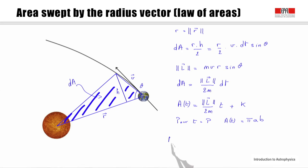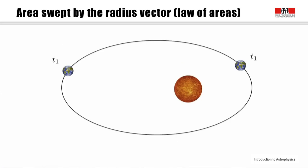Between two times t1 and t2, we have that A(t1) minus A(t2) is equal to the norm of the angular momentum over 2m times delta t, where delta t equals t2 minus t1. We have thus proved the second law. For any t1 and t2, what is important is the value of delta t, namely the time interval between the two observations.